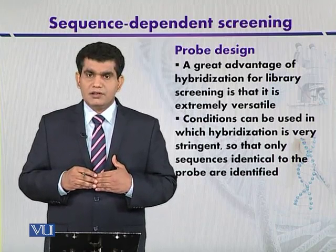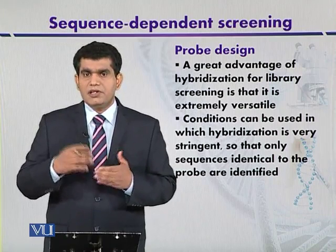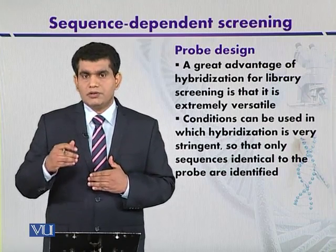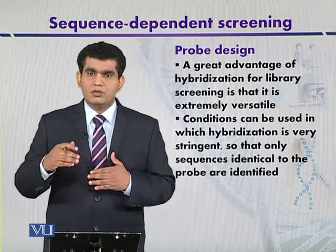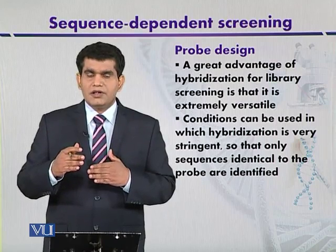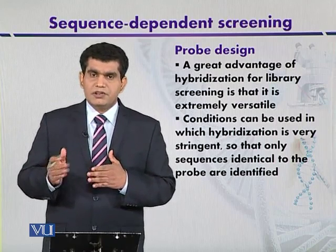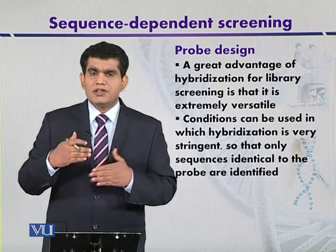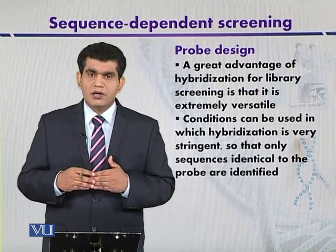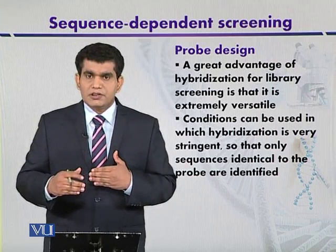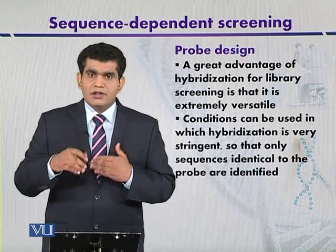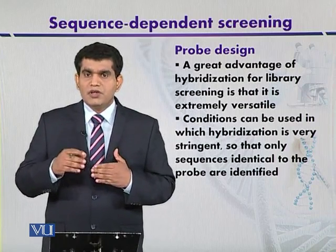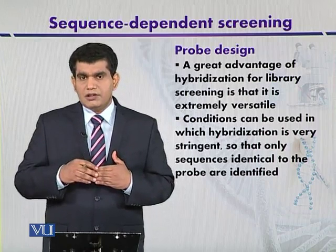At high stringency, only sequences that are highly complementary can base pair with each other. On the other hand, if we want to detect related sequences, hybridization can be performed at low stringency — for example, by lowering the temperature — so that closely related or even some partially related sequences can also form base pairs and hybridize.